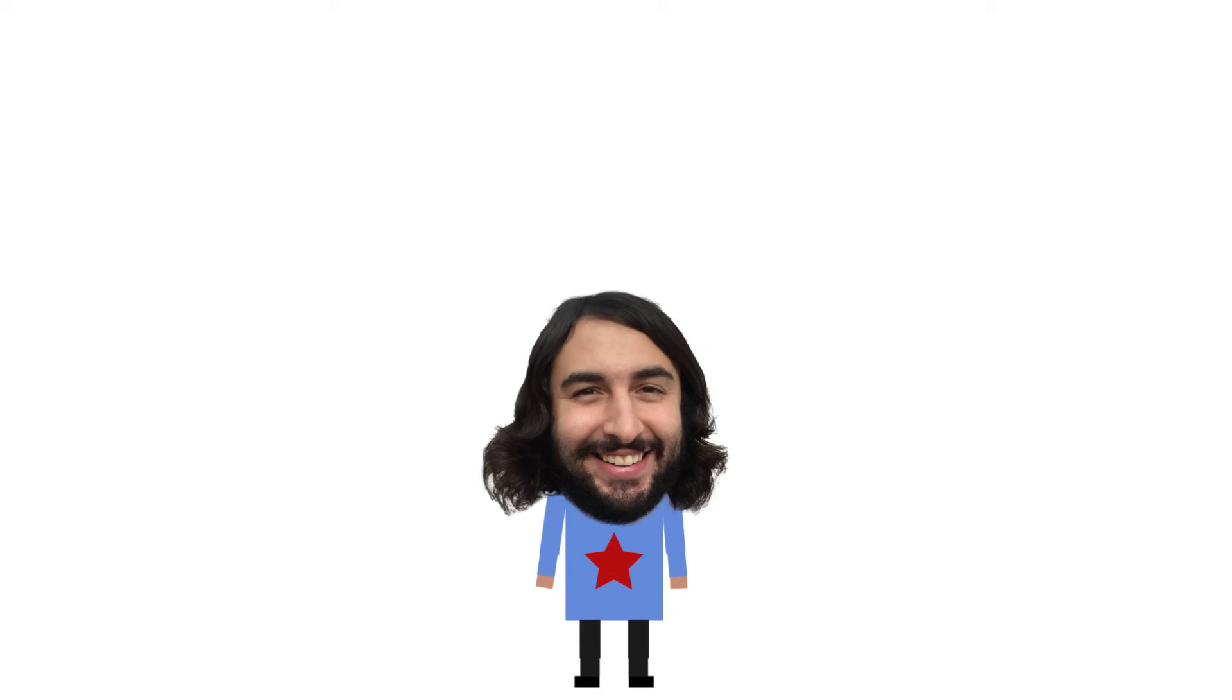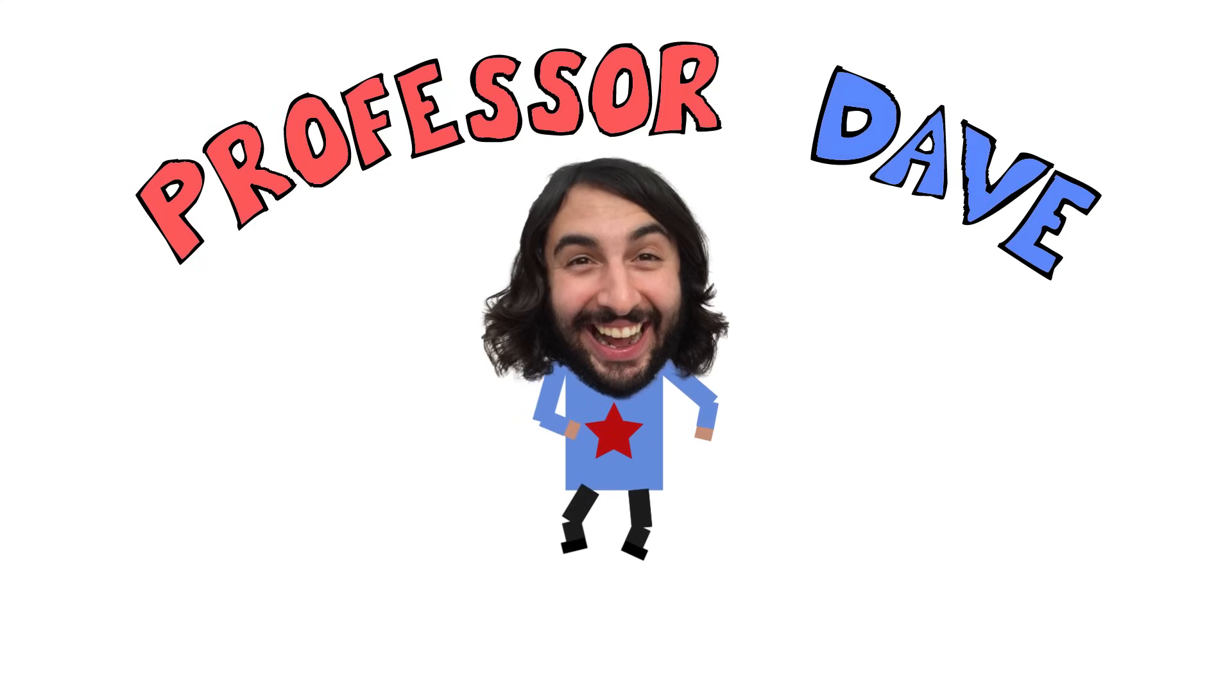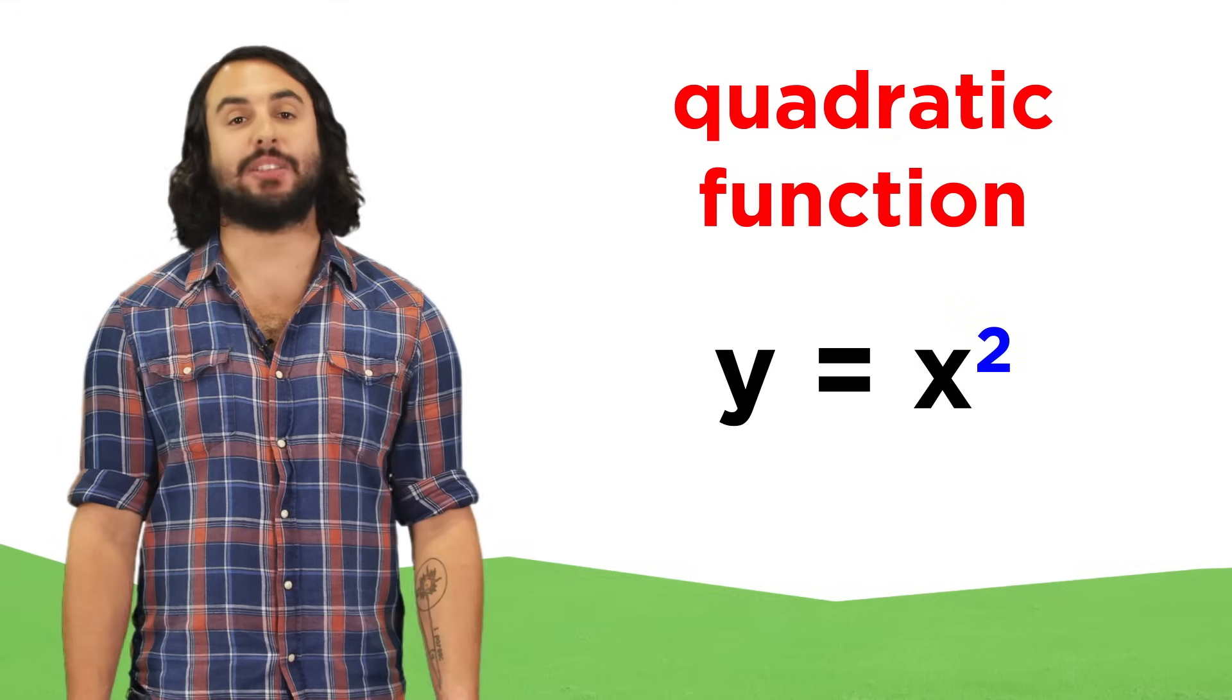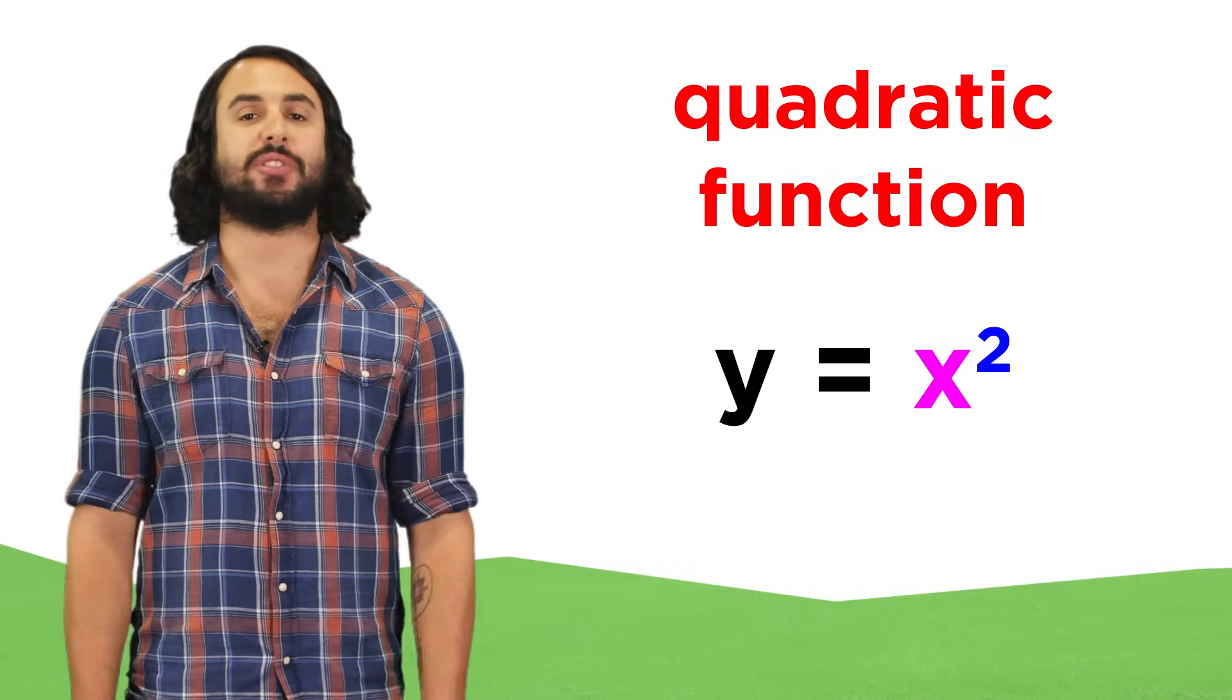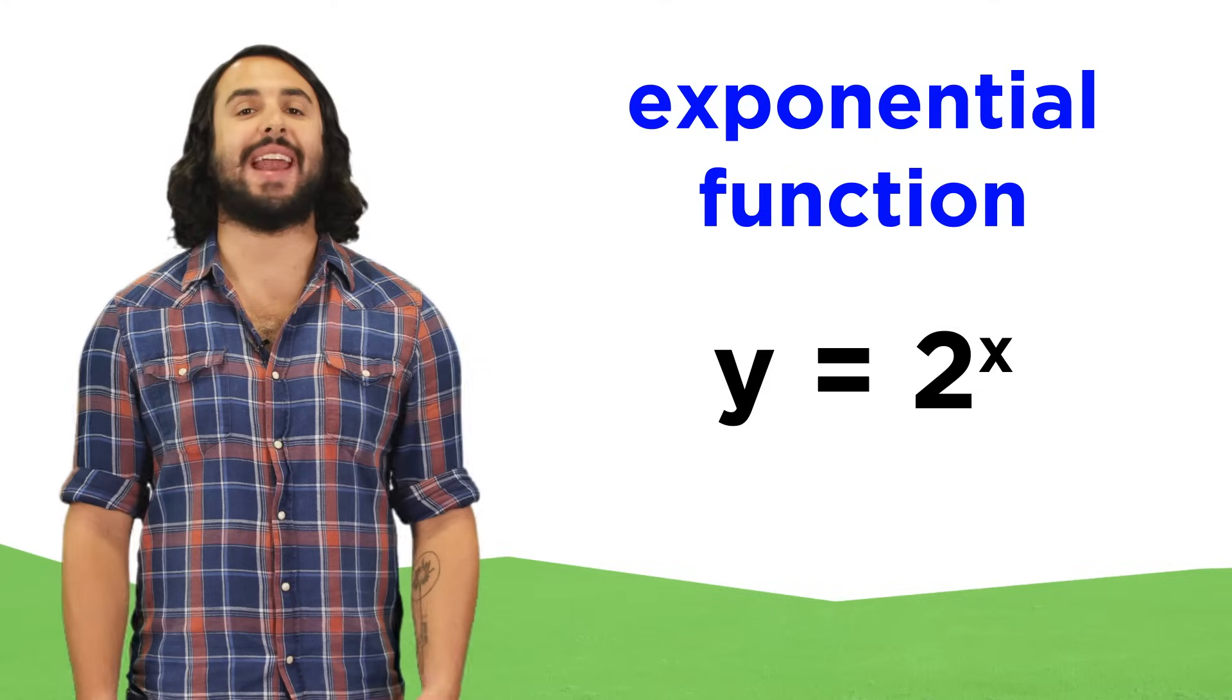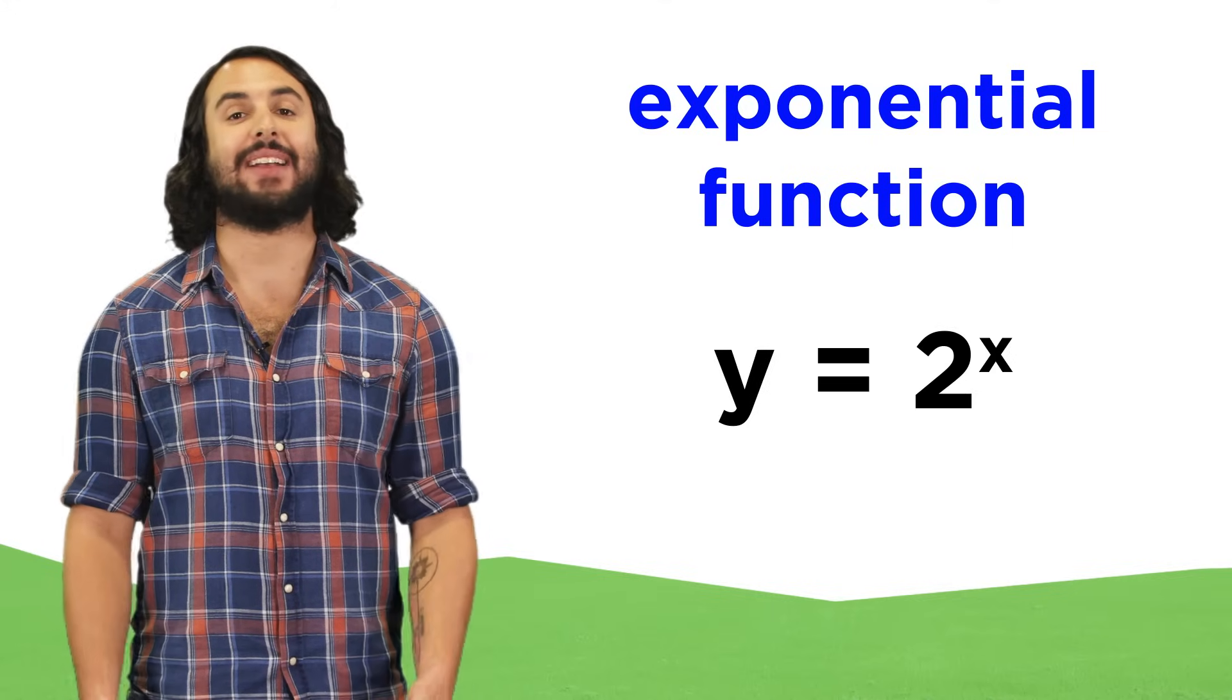Professor Dave again, let's learn about exponential functions. We've learned about a variety of functions, including ones with exponents in them, like x squared. But what if these two items swapped positions, and we instead had two to the x power? This would be called an exponential function, because a variable is acting as an exponent.